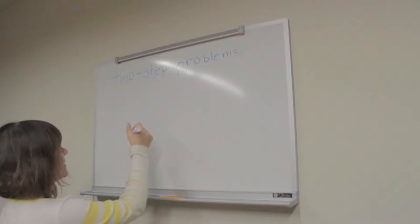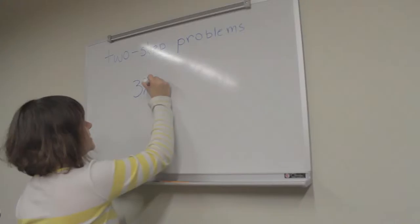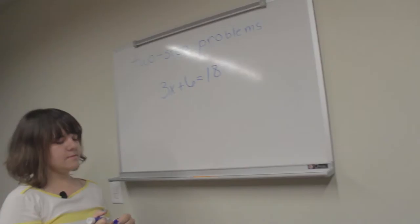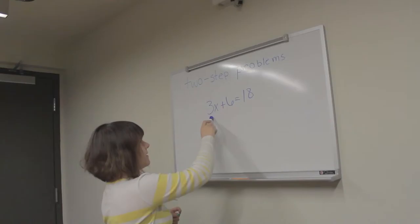So the problem that we're going to be working on today is 3x plus 6 equal to 18. The first step is to get all of the numbers that aren't with x onto one side of the equation.